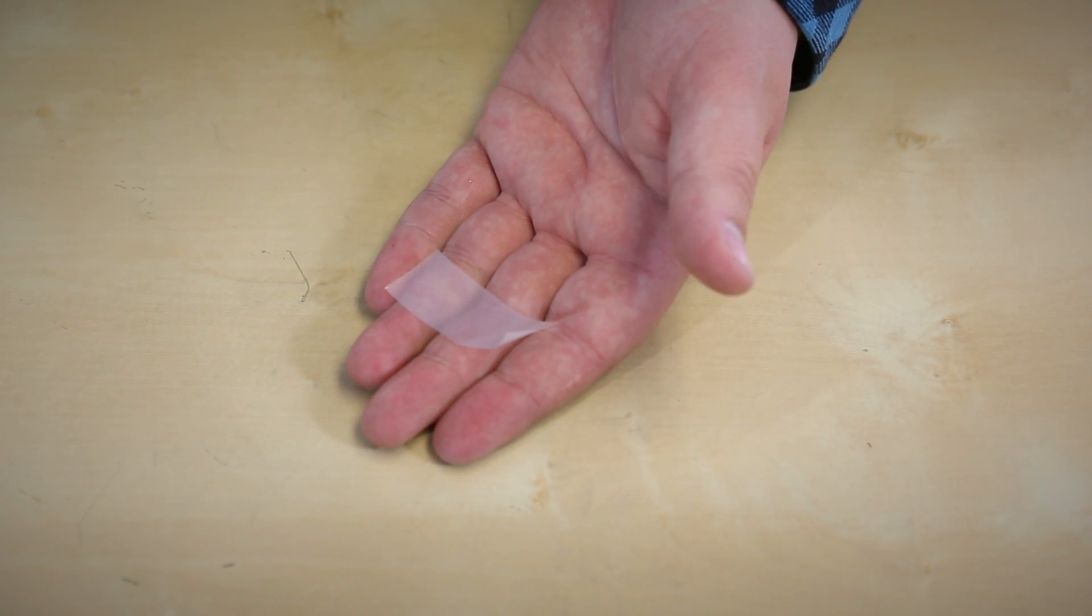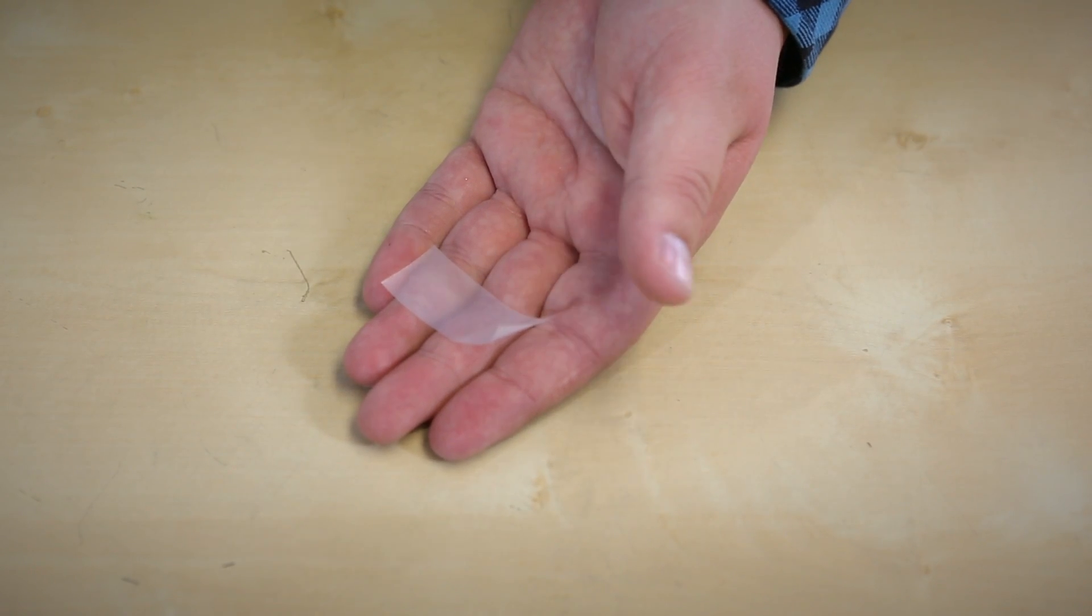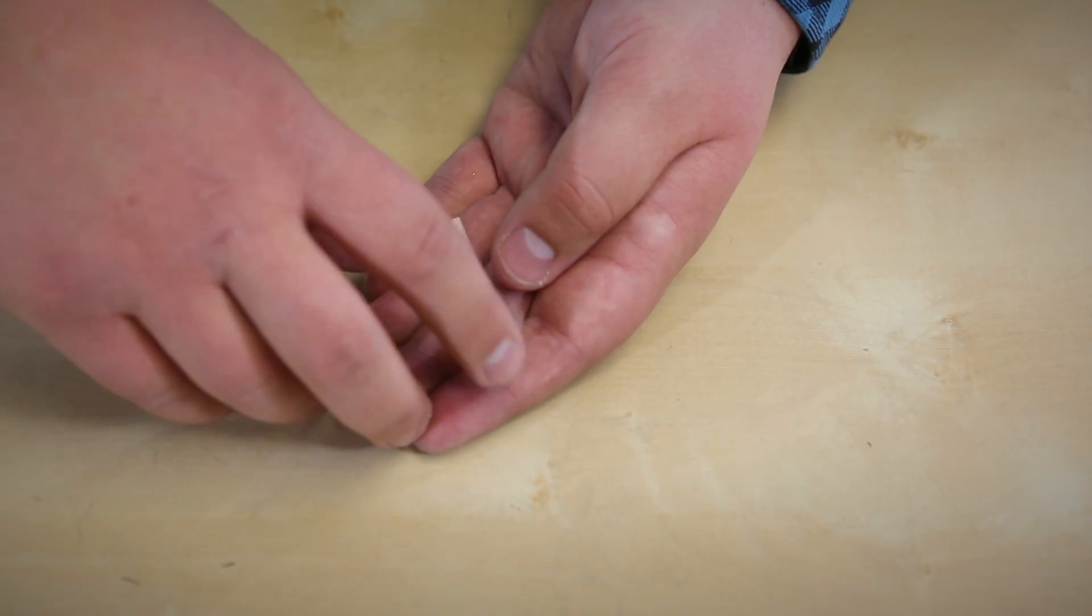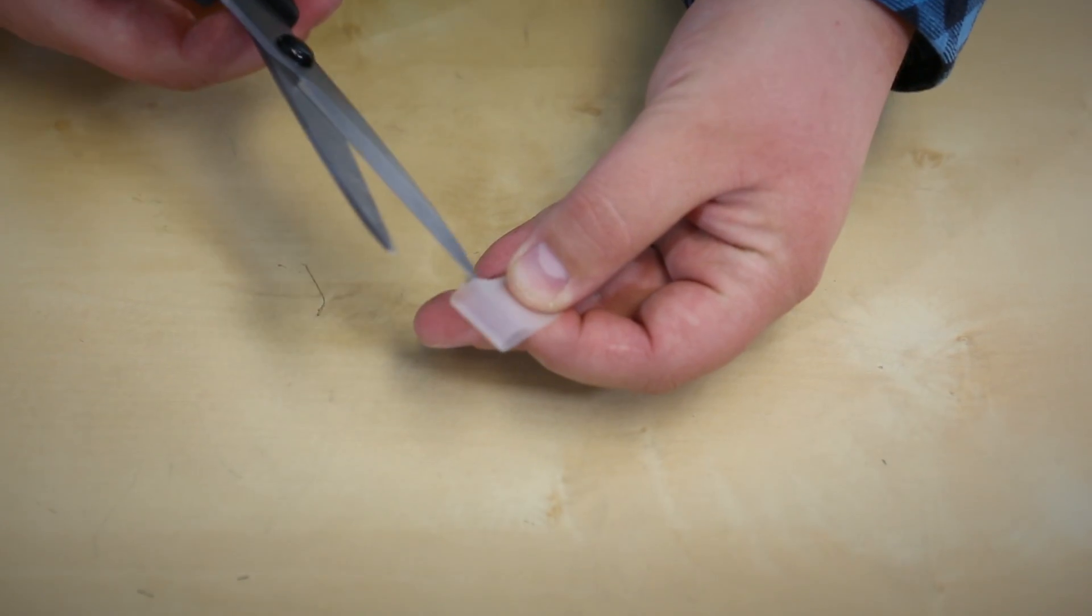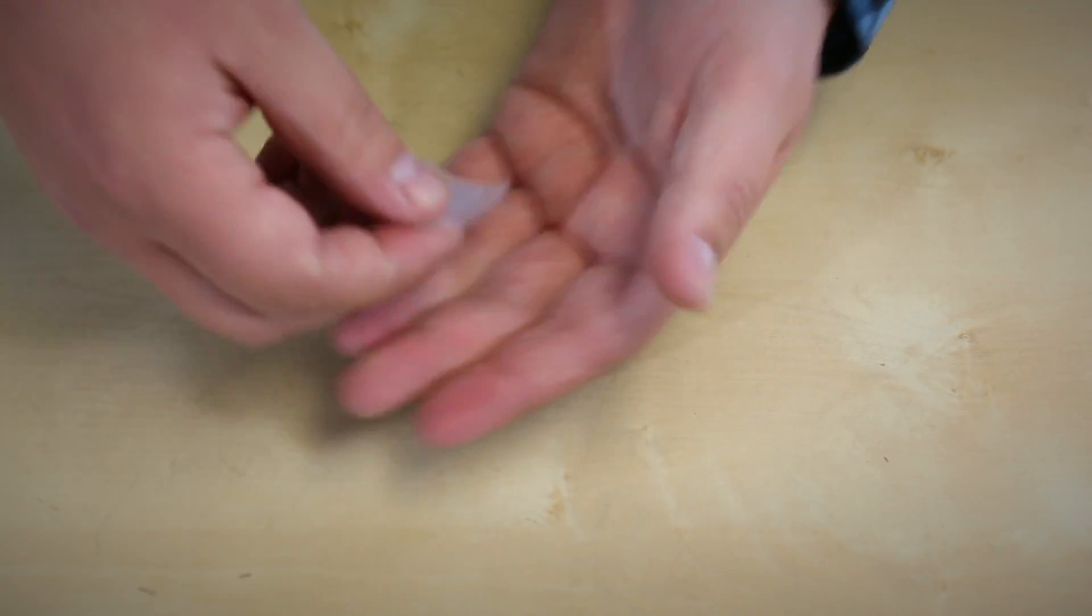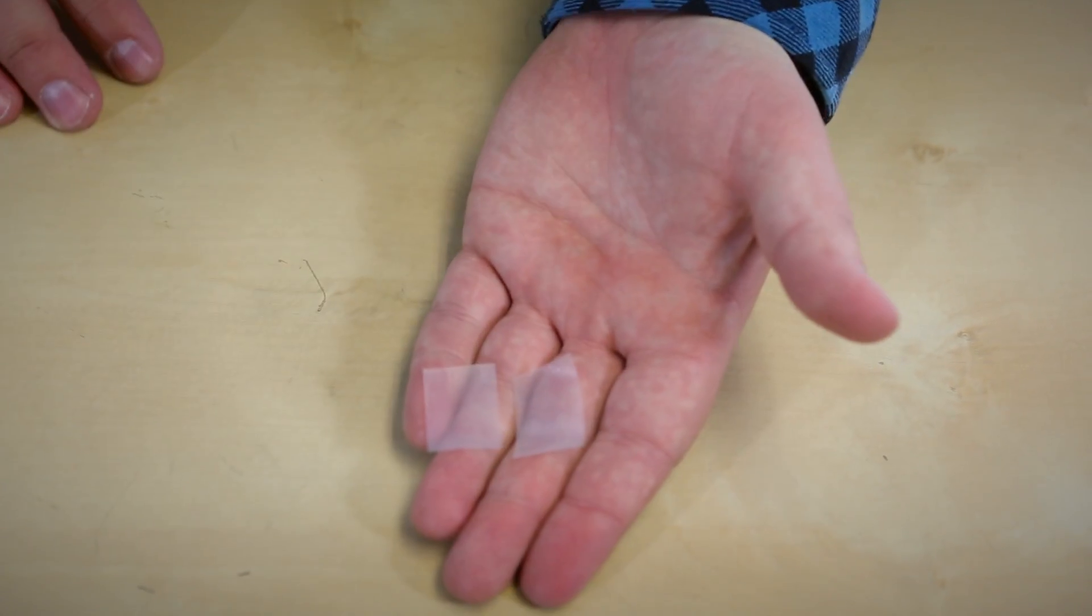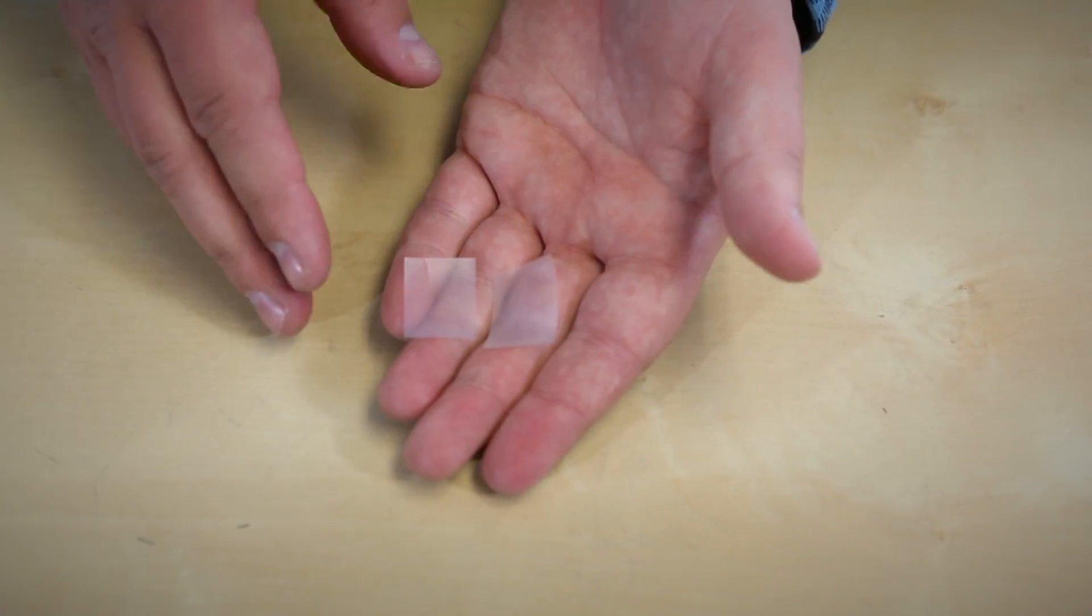The first thing we're going to prep is the 2 inches of iron-on tape. We're going to fold over the piece of tape and then cut it, giving us two 1-inch parts. This is going to go on the outside of the straight connectors to make sure that they can be ironed into the garment.